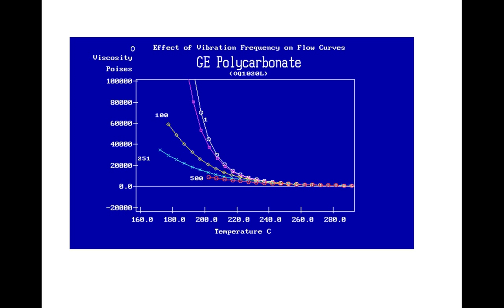Now we see that viscosity for a given temperature is much less as we increase frequency. This is the known phenomenon of shear thinning. Basically, this is plotted differently since omega is constant and temperature varies this time. So if we were to take a formula such as the Carreau equation and plot it so that omega remains constant but temperature varies, such as in a WLF type, we would get something which should look like this graph in the previous one.